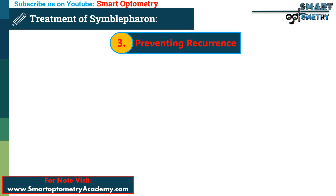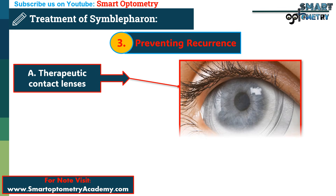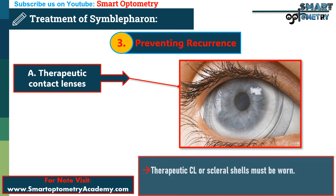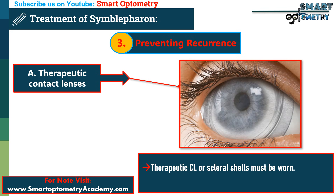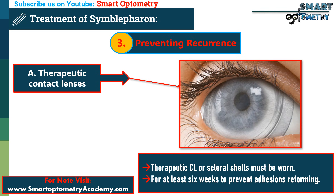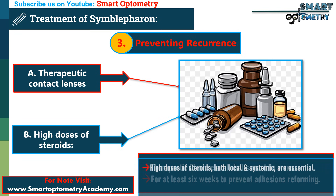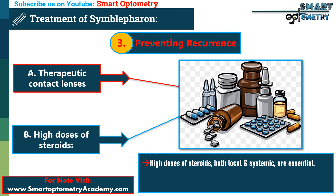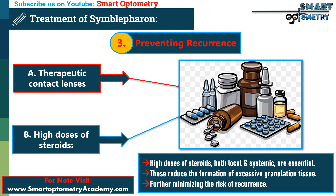3. Preventing recurrence of adhesions. Prevention of recurrence includes: a. Therapeutic contact lenses or scleral shells. After treatment, therapeutic contact lenses or scleral shells must be worn for at least 6 weeks to prevent adhesions from reforming. b. High doses of steroids. Additionally, high doses of steroids, both local and systemic, are essential. These reduce the formation of excessive granulation tissue, further minimizing the risk of recurrence.